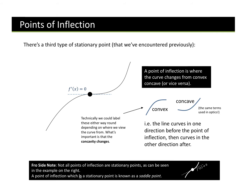A point of inflection is where the curve changes from convex to concave but we can still see the gradient is still increasing. Not all points of inflection are stationary points, but a point of inflection which is a stationary point is known as a saddle point.